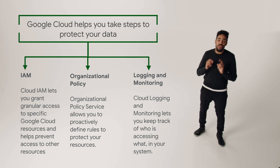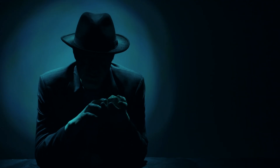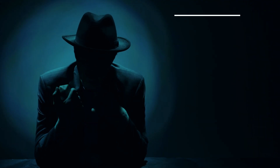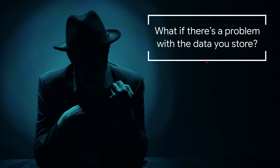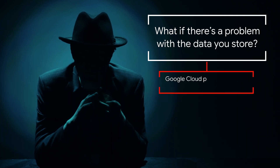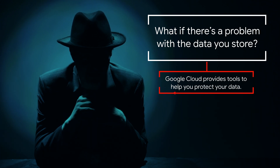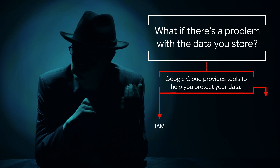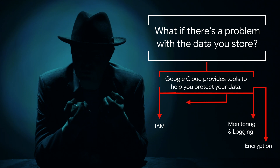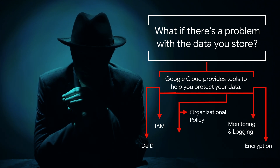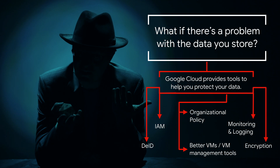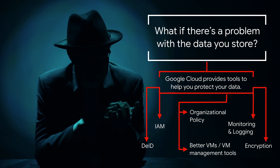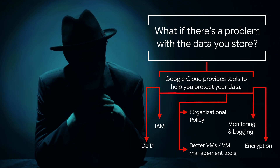And that's it — I know the answer to the question. You learned that Google provides a plethora of tools to help customers protect data, including IAM, encryption, logging and monitoring, organizational policy, and more. These features allow you to make sure only valid data is being stored, control who can access data that's stored, and help you find the data you do store.